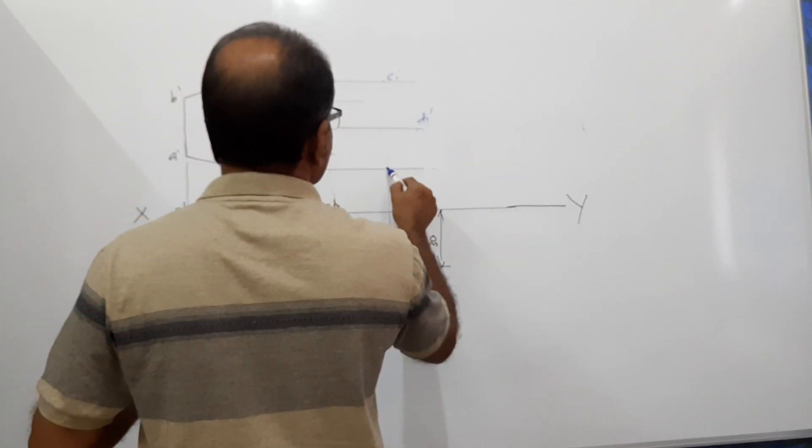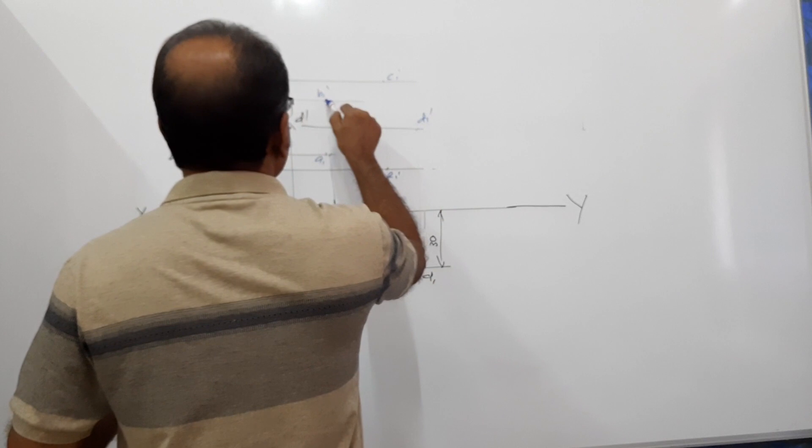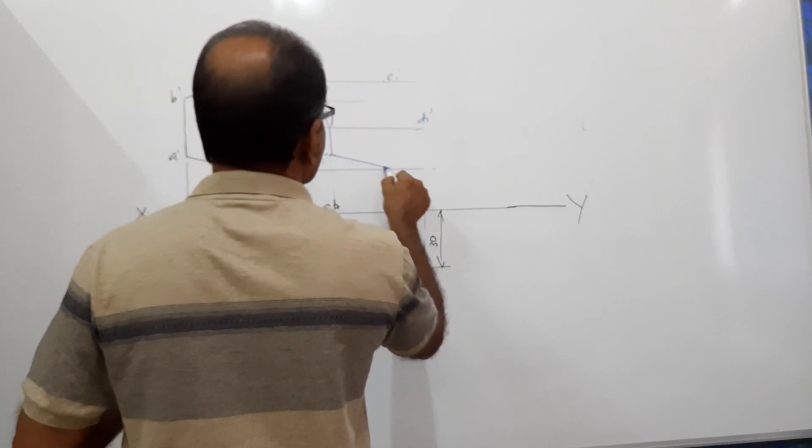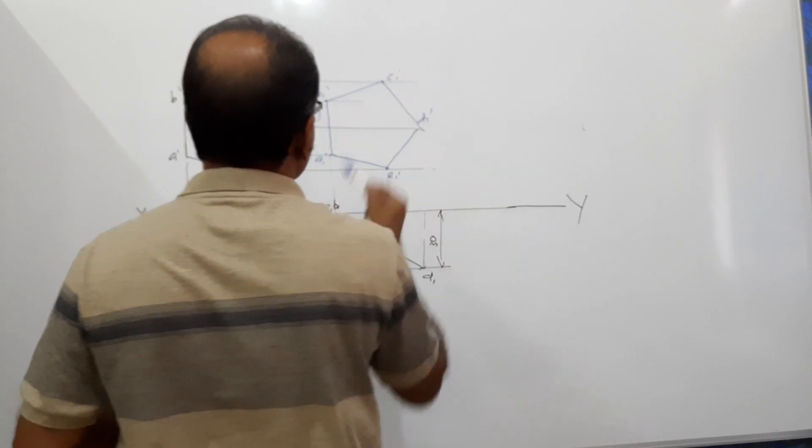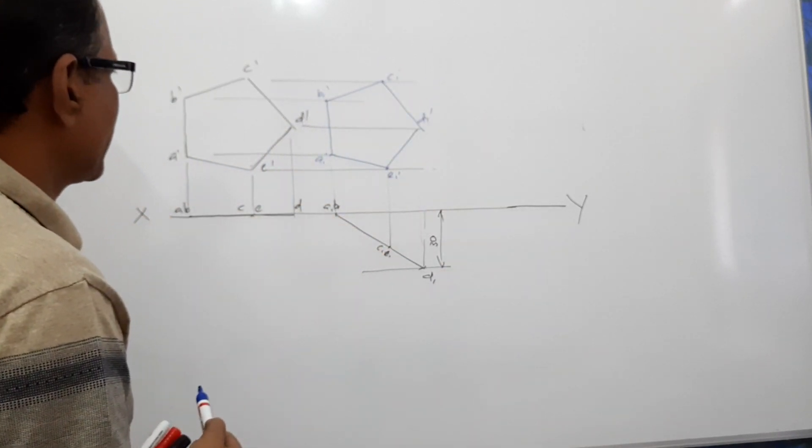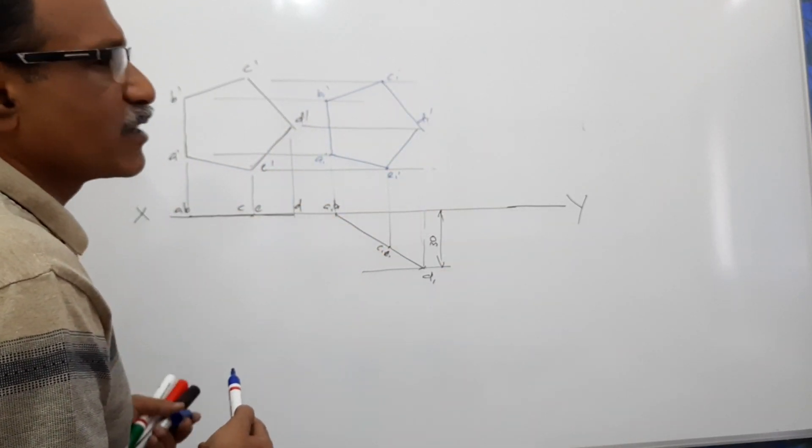D1 dash, E1 dash. Connect them. You get an irregular pentagon, not a regular pentagon, irregular pentagon.